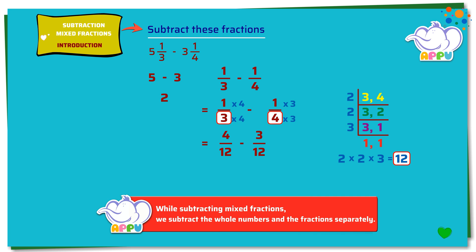Now the denominators are the same for both the fractions — that is 12. We write the denominator as 12 and we subtract the numerators: 4 minus 3 equals 1. This is 1/12. So the answer is 2 and 1/12.